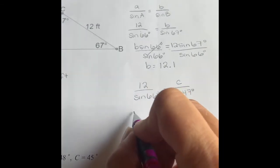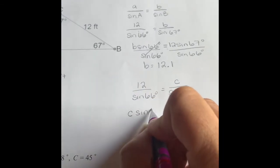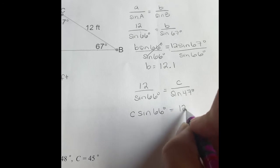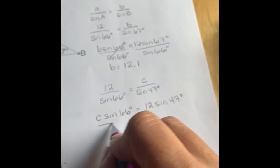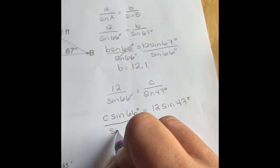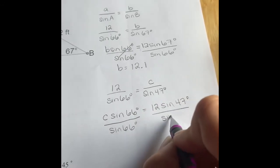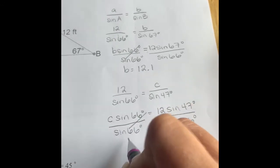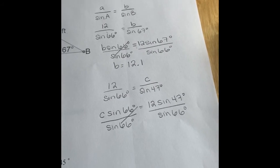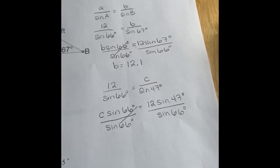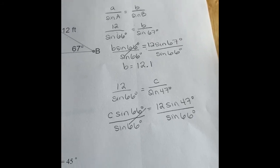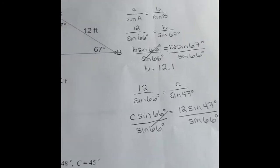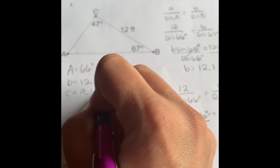So C times the sine of 66 degrees is equal to 12 times the sine of 47 degrees. In order to get C by itself, we've got to divide by the sine of 66 degrees. So we can plug this into our calculator to find C. So 12 times the sine of 47, enter divided by the sine of 66, enter. Rounding to the nearest tenth, we get 9.6. So C has a length of 9.6 feet.